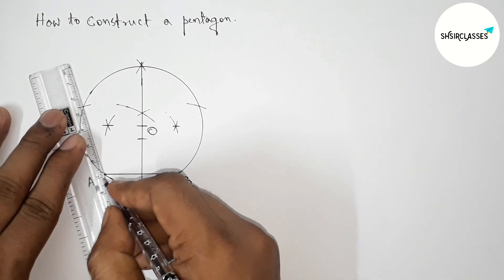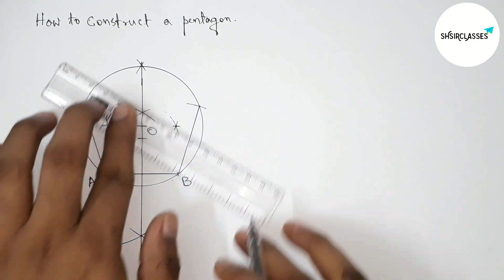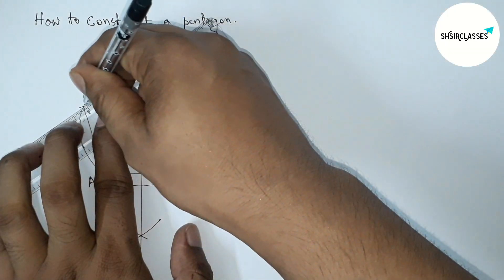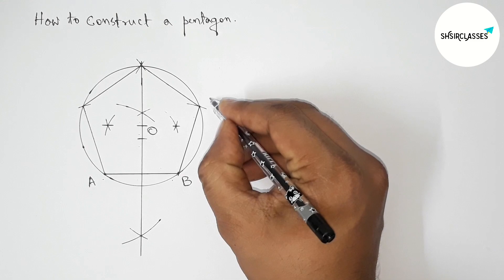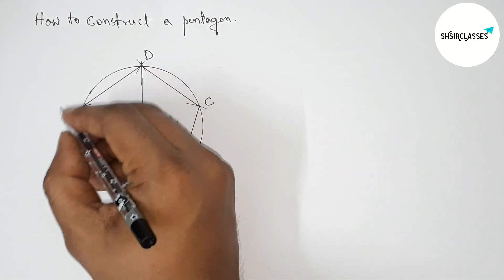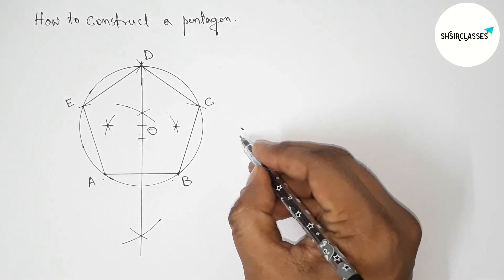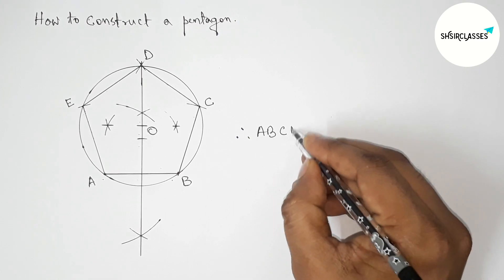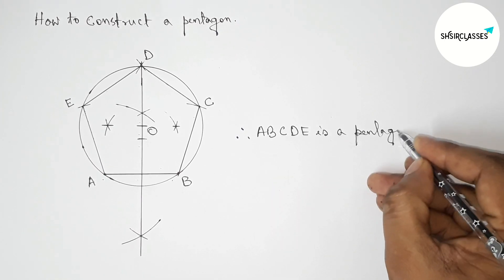Now joining all the sides: joining this line, then this line, then this line, then this side, then this side. Labeling all the vertices — this is C, here is D, and this is E. So we have our required pentagon ABCDE. Therefore, ABCDE is a pentagon.